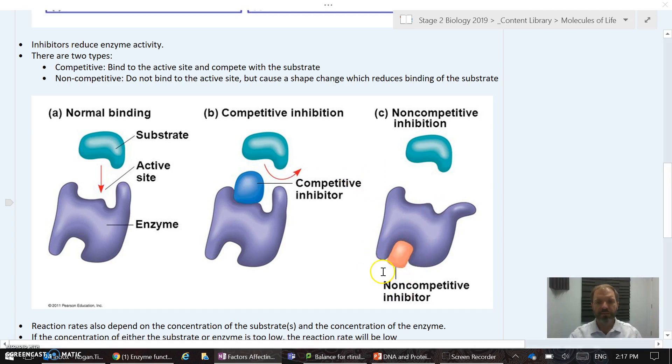This type of inhibitor might bind somewhere else outside the active site, but because it's caused the binding here, the shape of the protein has changed slightly, and therefore the substrate won't bind or won't bind as much. So this non-competitive inhibitor is inhibiting or slowing down the possibility of that enzyme from working.